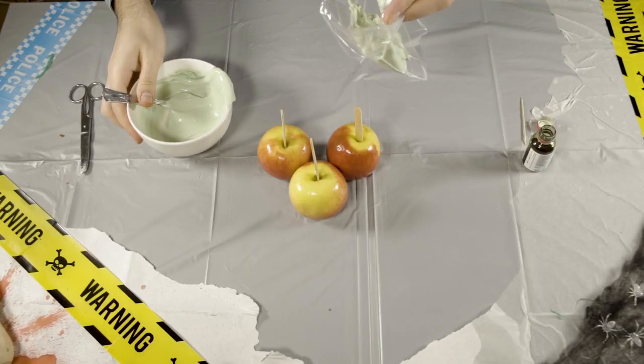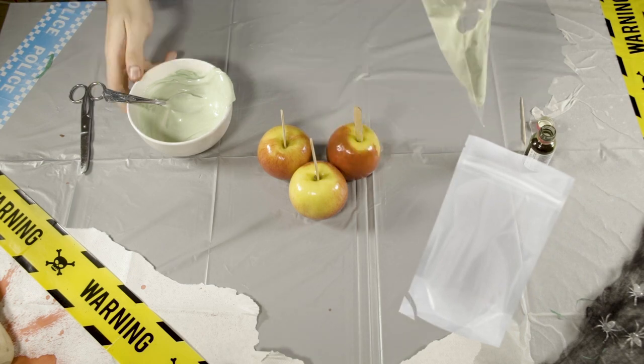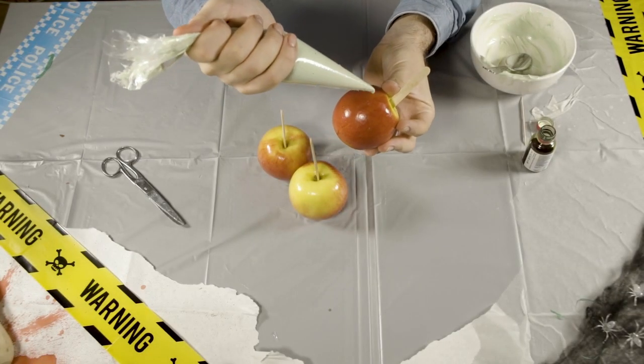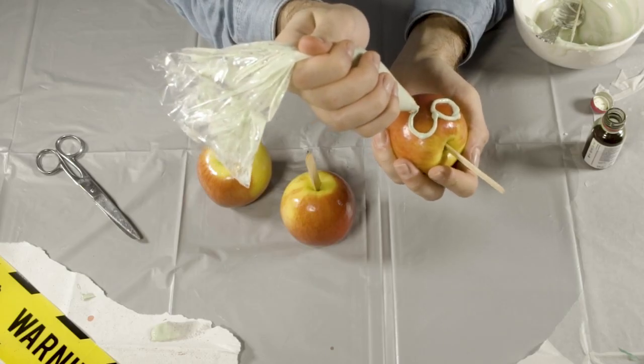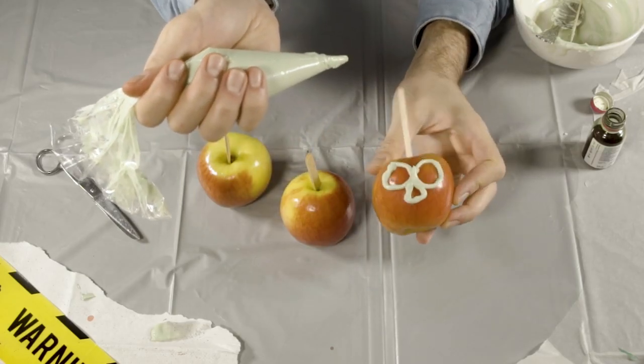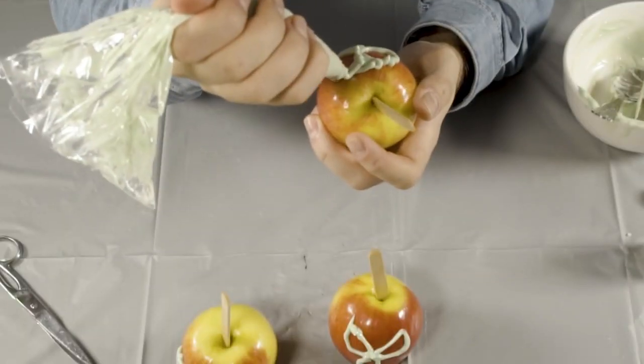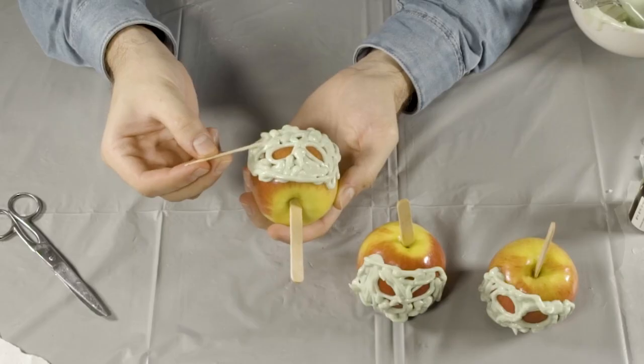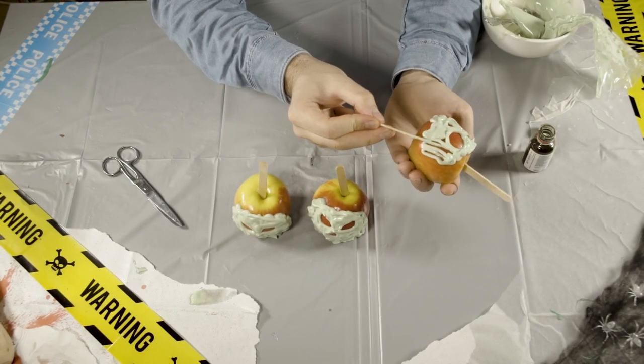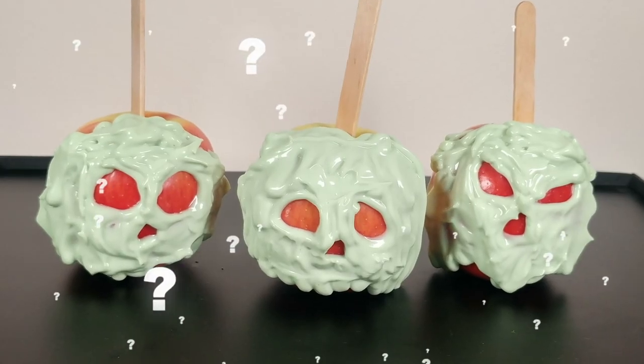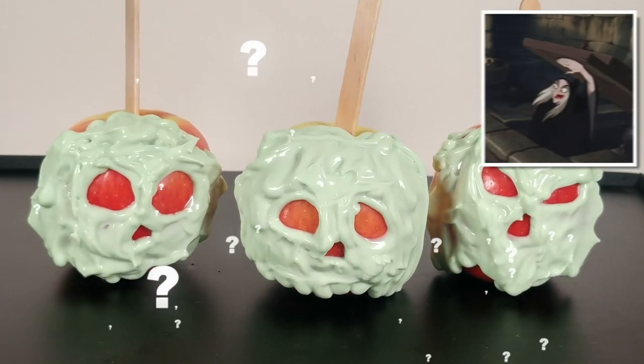Using a steady hand, start by piping the features onto your apple, two circles for the eyes, and an upside-down heart shape for the nose. Then, fill in the surrounding areas by piping on the chocolate and using a toothpick to shape it, creating a dripping effect around the bottom half of the apple. Leave them out to set for a few hours and serve. Would you take one of these tasty treats from a haggard old witch?